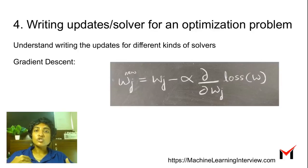The fourth is writing updates or solvers for an optimization problem. When you come up with your loss function, sometimes you want to implement the solver yourself for efficiency reasons, especially when not using standard platforms like TensorFlow. You need a good appreciation of how different solvers work—not just what they do, but what is the update in gradient descent? Can I implement this update myself?